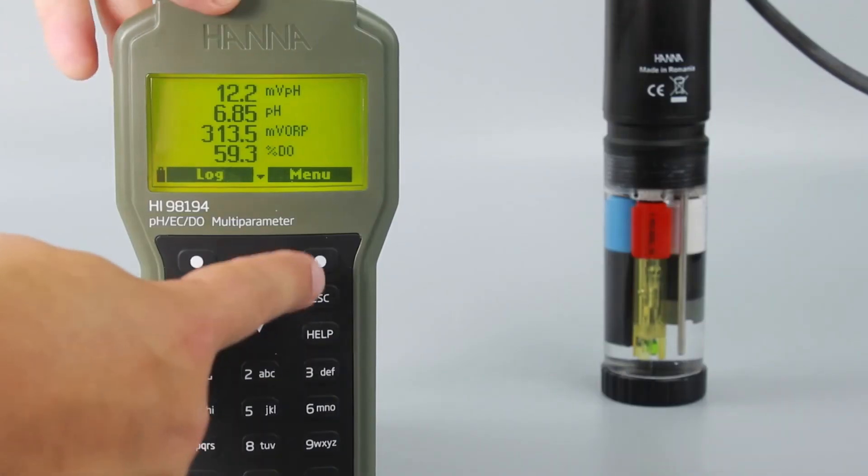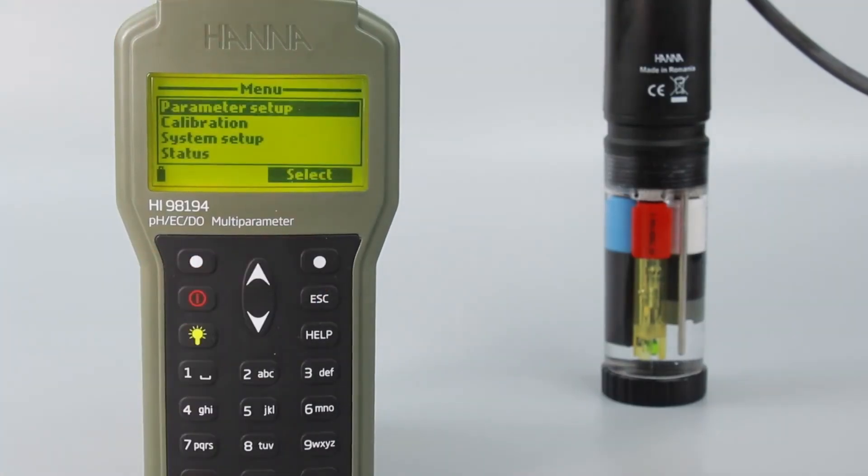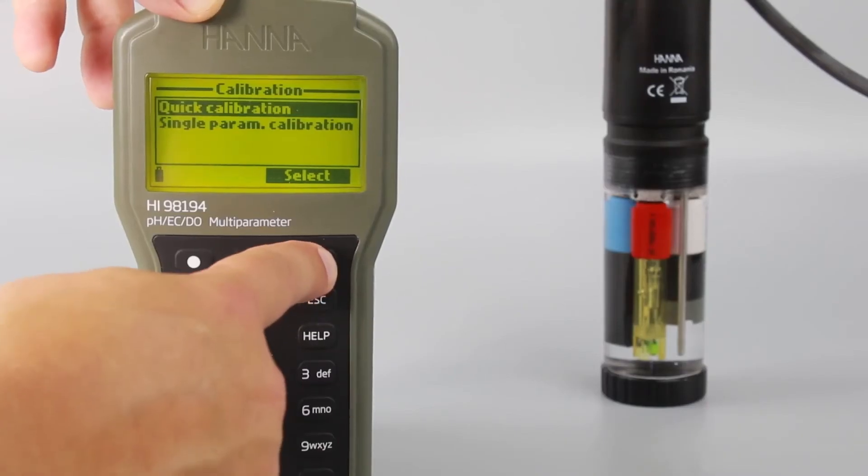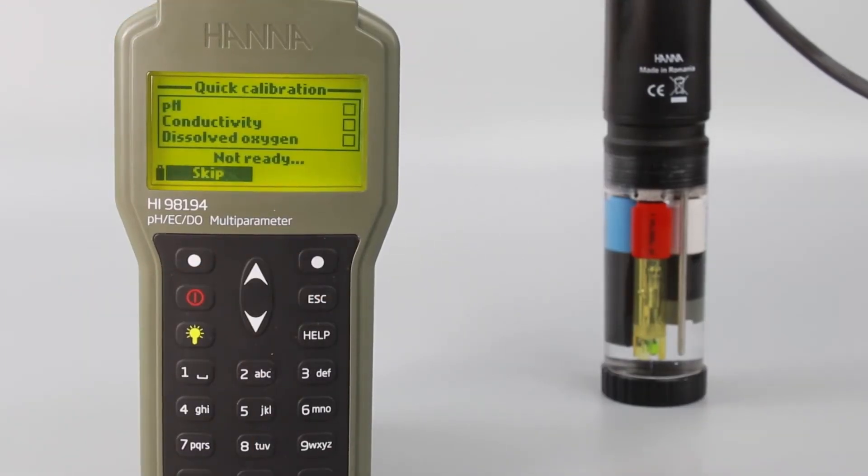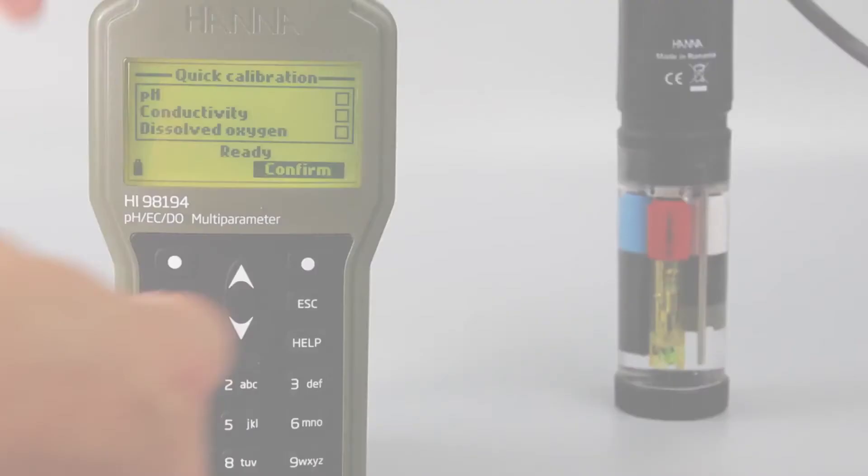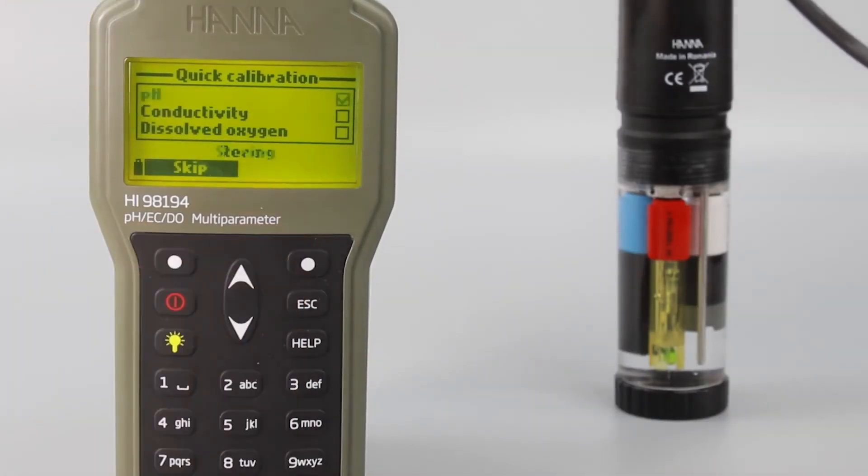From the meter, press Menu and then Calibration. From there, press Quick Calibration and follow the prompts. You'll calibrate for each sensor in stages. If you want to skip calibration on a specific sensor, just press Skip.